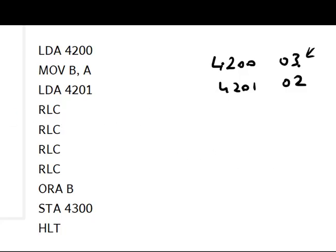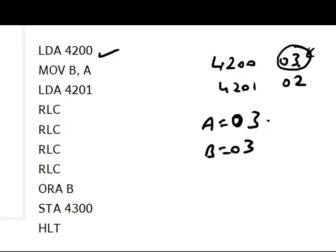The first instruction LDA 4200 loads the data stored at location 4200 into register A, so A becomes 03. Then MOV B, A moves the data from register A into register B, so B now holds 03.